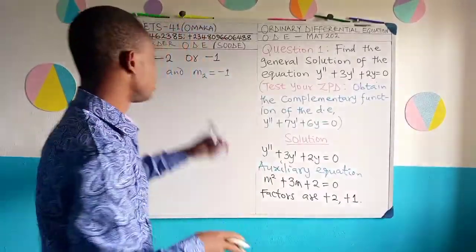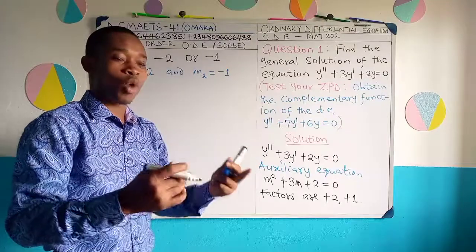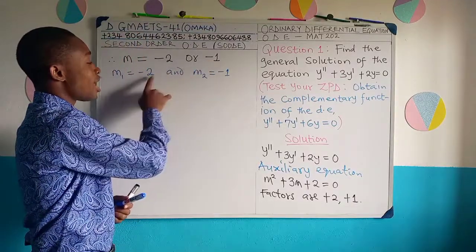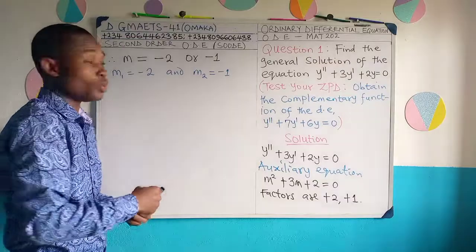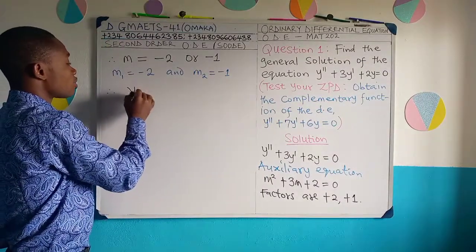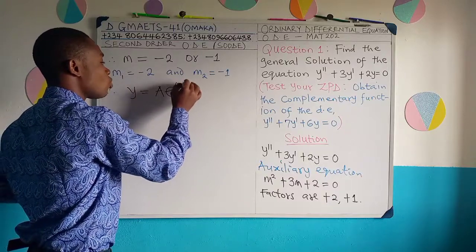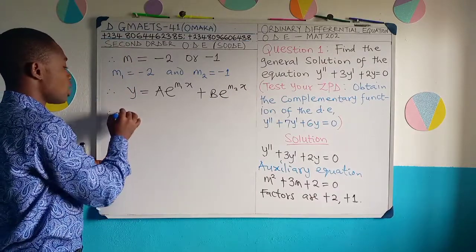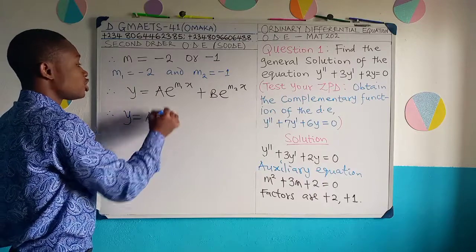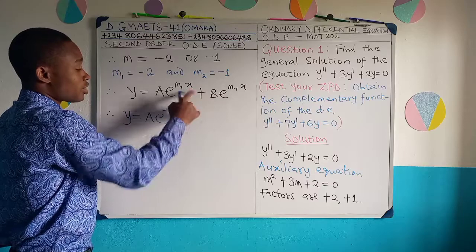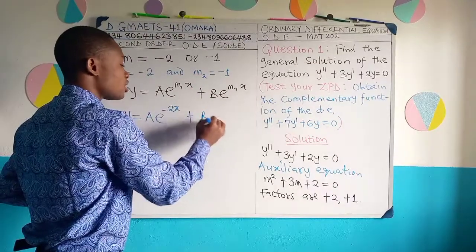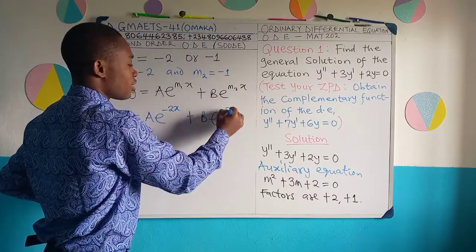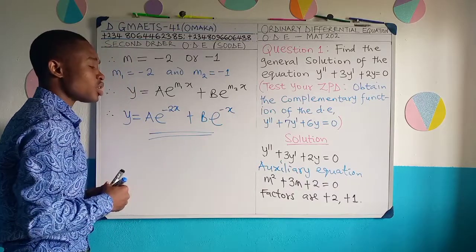There is no rule that m1 must be the first or smaller number. I could have said m1 = -1 and m2 = -2 — it still works. Therefore, the solution becomes y = Ae^(n1·x) + Be^(n2·x). Substituting: n1 = -2 gives Ae^(-2x), and n2 = -1 gives Be^(-x). So y = Ae^(-2x) + Be^(-x), and this is the answer to our problem.